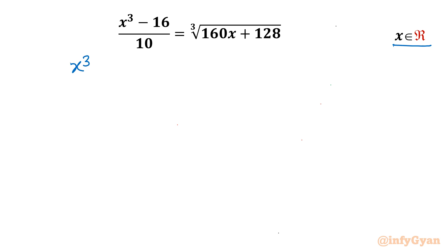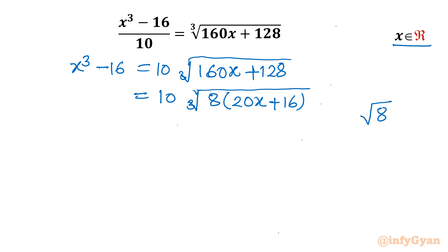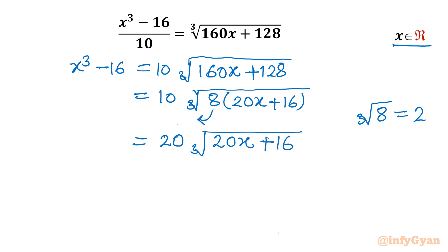So I will write x³ - 16 = 10 times cube root of (160x + 128). Now we can take 8 common inside the cube root. Once we take 8 common, it would be (20x + 16) left in the bracket. We know that cube root of 8 is 2, so taking 8 out gives us 20 · cube root of (20x + 16). The left hand side remains x³ - 16.